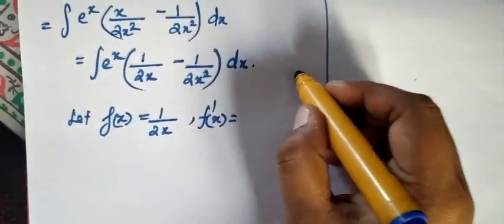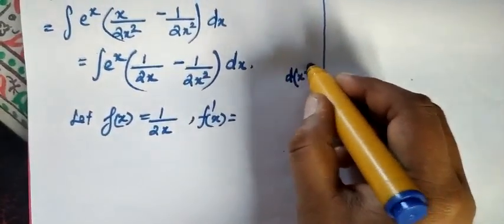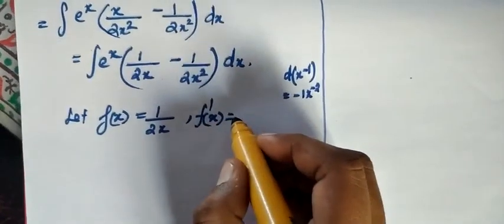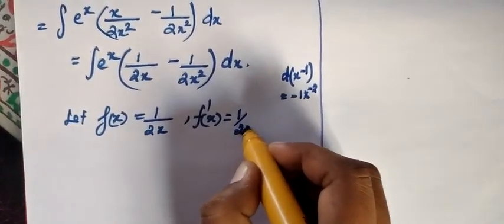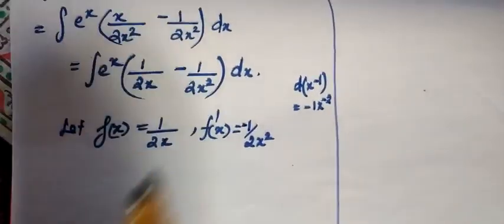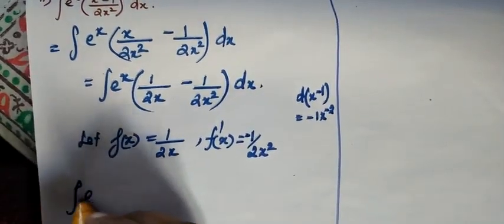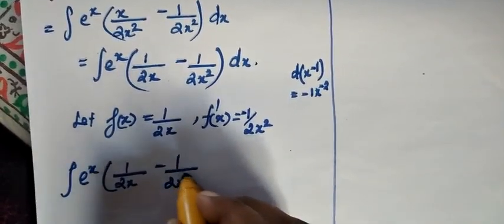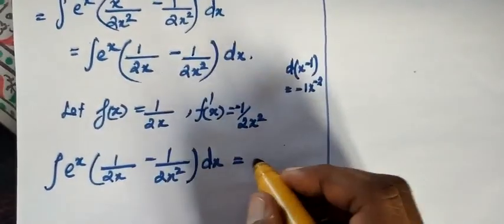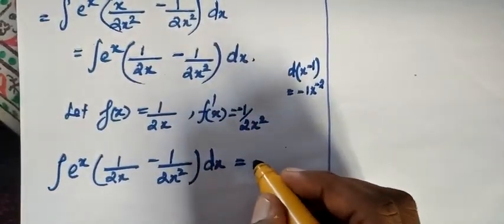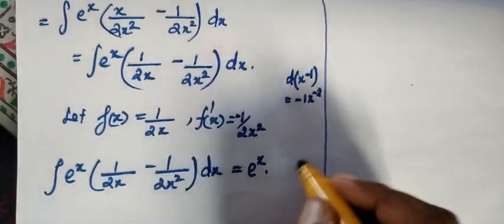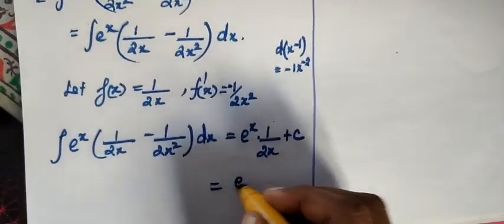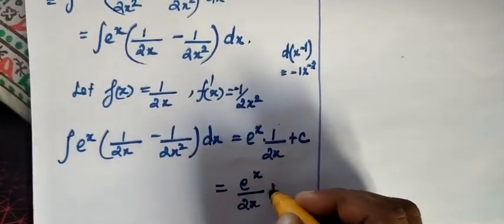We differentiate: the derivative of x to the power minus 1 gives minus x to the power minus 2. So f'(x) equals minus 1 divided by 2x². That confirms the pattern. Therefore, integral eˣ (1 divided by 2x minus 1 divided by 2x²) dx equals eˣ times f(x), which is eˣ divided by 2x plus c.